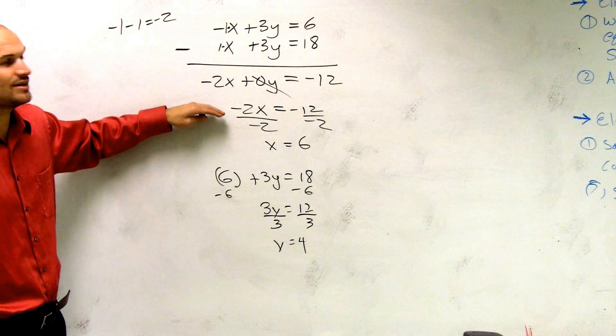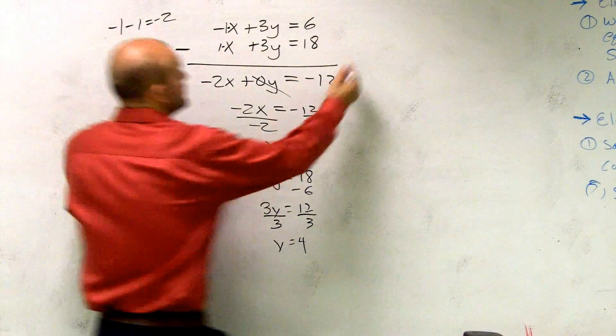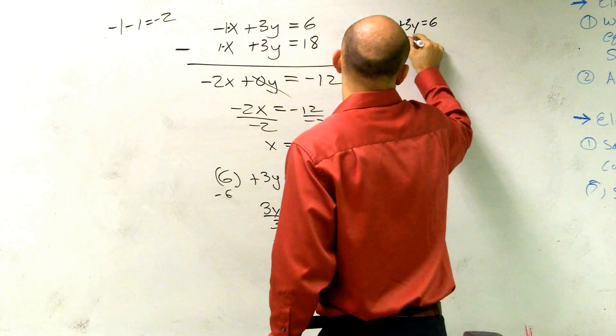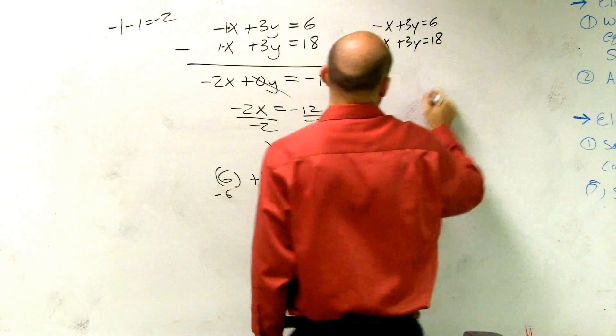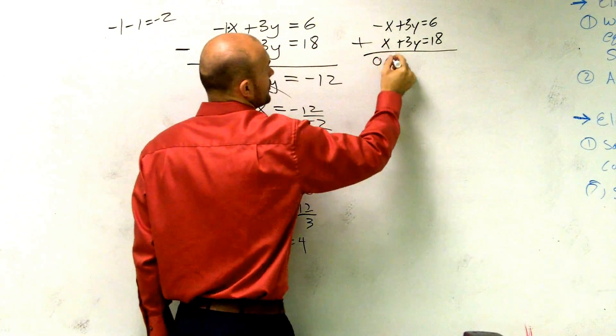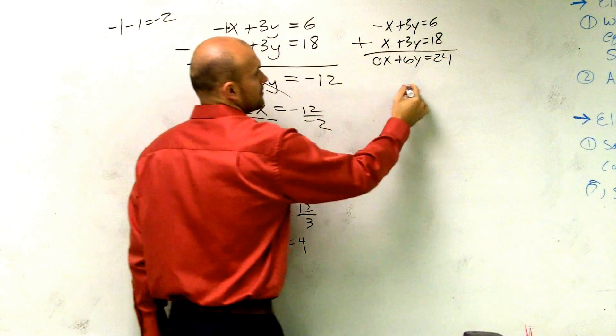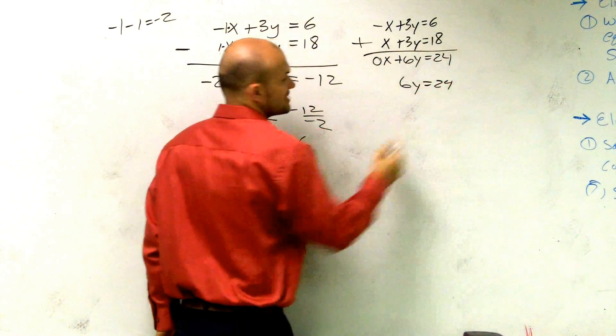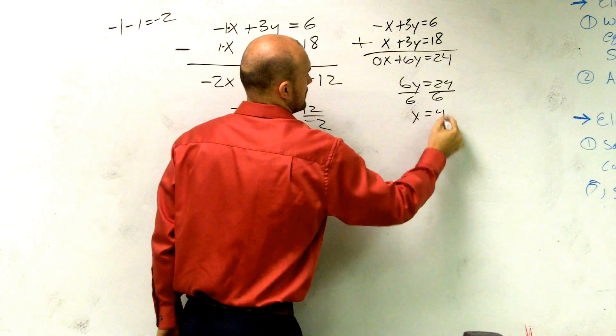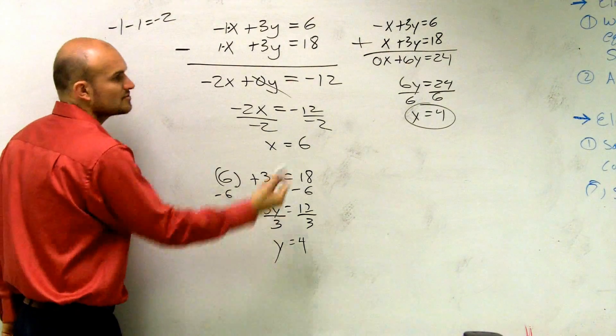OK. Let's say we did want to add them, just for fun, see if we'd get the same answer. So I'd have negative x plus 3y equals 6. x plus 3y equals 18. If I added them like you wanted to, you get 0x plus 6y equals 24. Right? 6y equals 24. Divide by 6. Y equals 4. Does y equal 4? Right? So it's the same way.